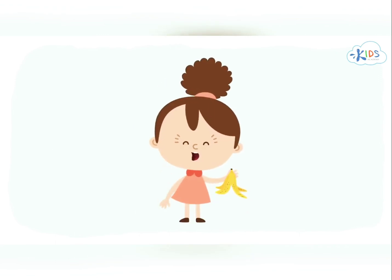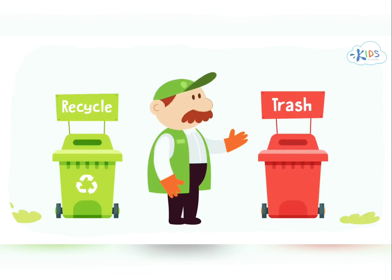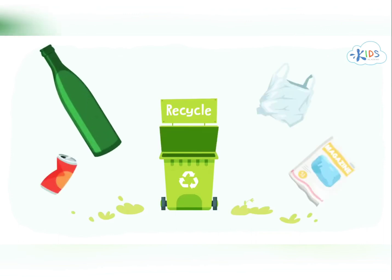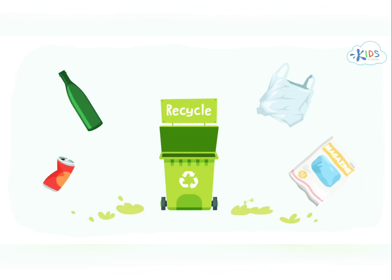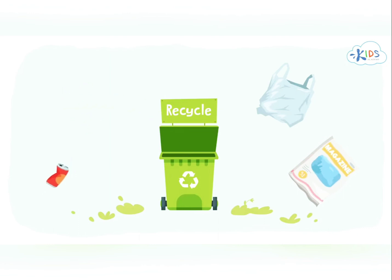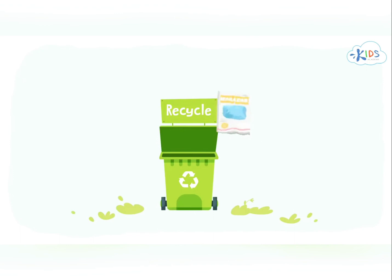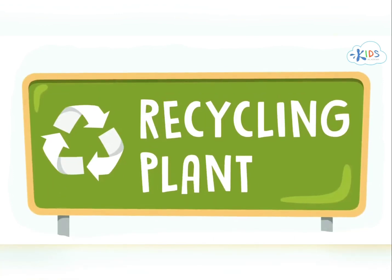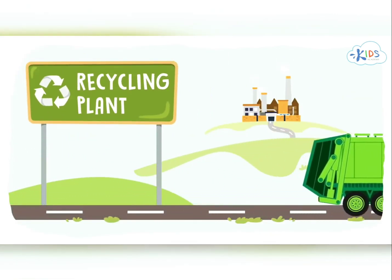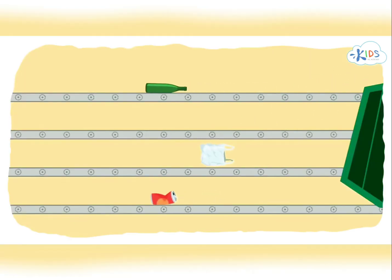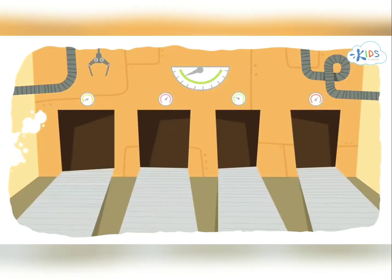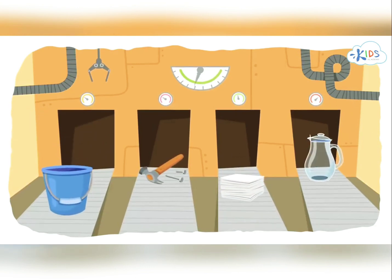Recycling is when we take old trash and make it into something new. Can we recycle bananas? No. Some trash can't be recycled — these things go into the trash bin. But we can recycle a glass bottle, an aluminum can, a plastic bag, and a magazine. These things go into the recycling bin. The recycling bins go to a special place called the recycling plant. That's where the magic happens. Bottles, cans, plastic, and paper are chopped into tiny bits, then melted or turned into mush. Now they can be used to make new things. That's recycling.